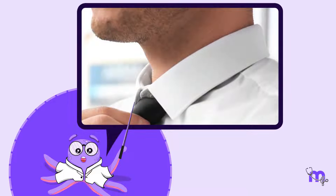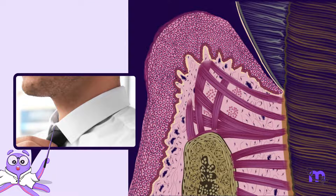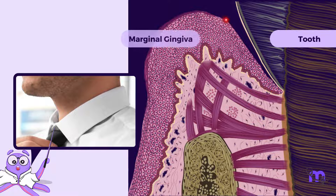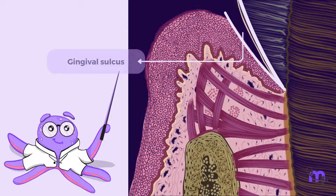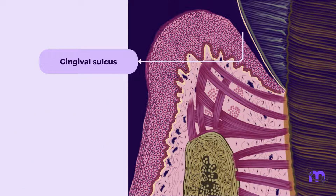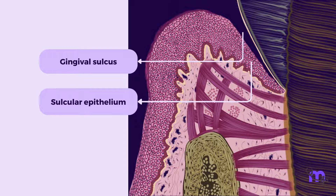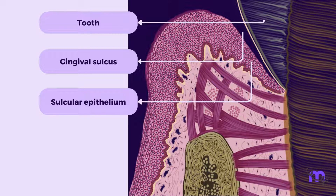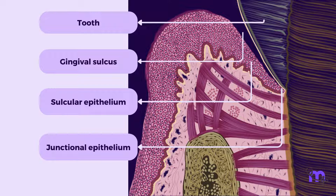When you wear a shirt, there is a natural space between your neck and the collar. Similarly, a space exists between the tooth and marginal GENGIVA. This V-shaped space is called the GENGIVAL SULCUS, which is bordered by the sulcular epithelium on one side and the tooth on the other, with the junctional epithelium present at its most apical end.